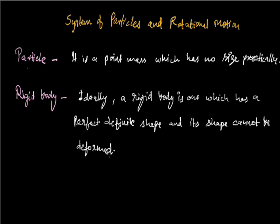In our daily practice we can see any rigid body shape can be deformed just a little by applying an external force. So in our complete discussion regarding this chapter, system of particles and rotational motion, we will consider an ideal rigid body means a rigid body the shape of which cannot be deformed.